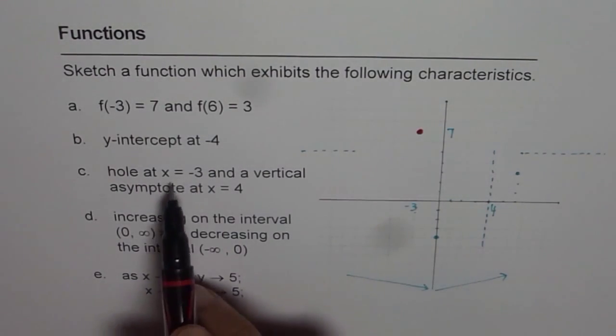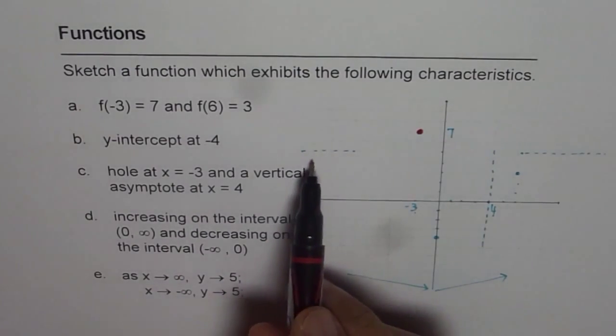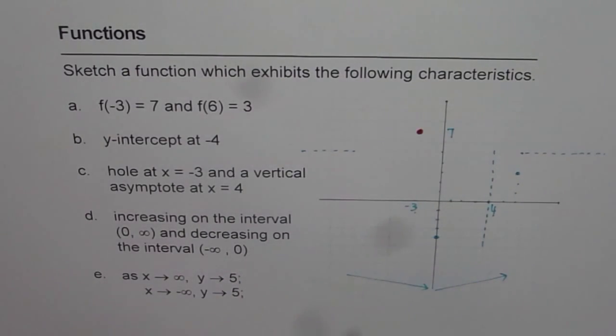But make it bold so that it reflects that at -3 the value of the function is indeed 7. And also at -3 we need a hole, right? So wherever we'll cross -3 we'll put a hole. Okay, that's one criteria.